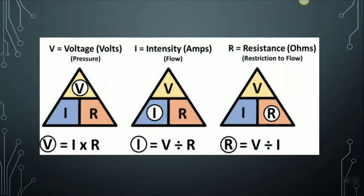It states that V equals I into R, or voltage equals amperes into ohms. Here we have shown this formula in a triangular figure. This also shows how the formula can be rearranged to calculate for voltage, amperes, or resistance. If I ever get confused about how it works, I simply draw this little diagram and remember that if I cover up the one I am trying to find with my thumb, the other two symbols tell me what to do to calculate the answer.